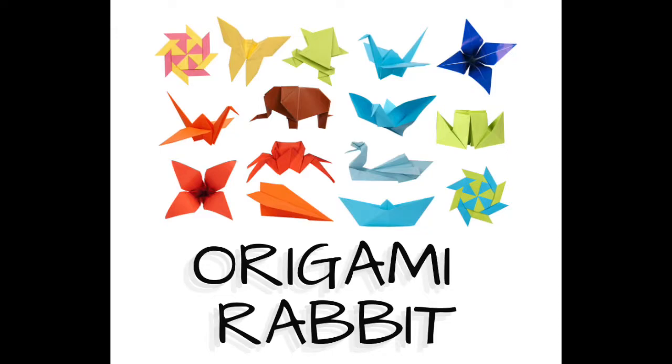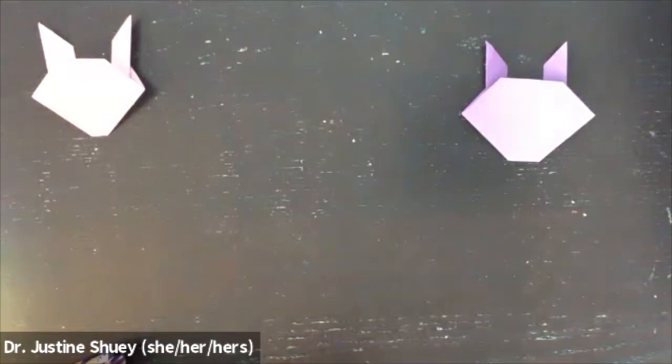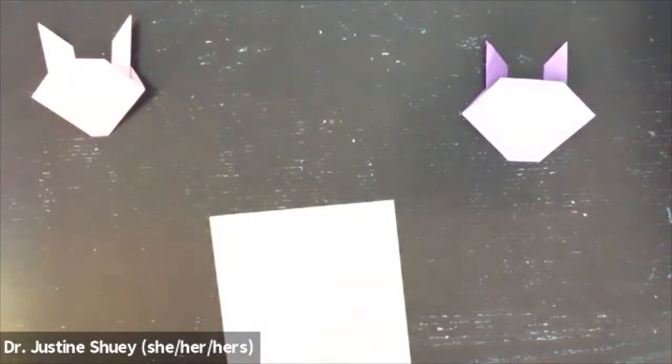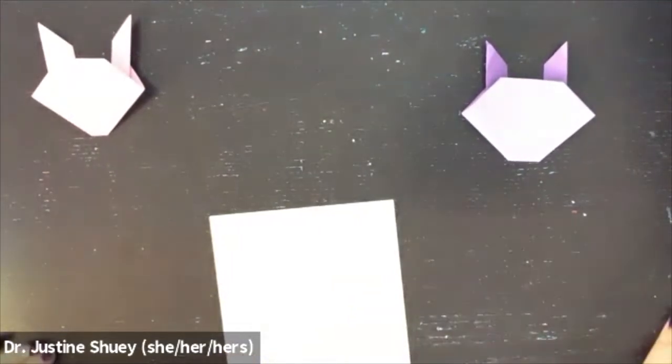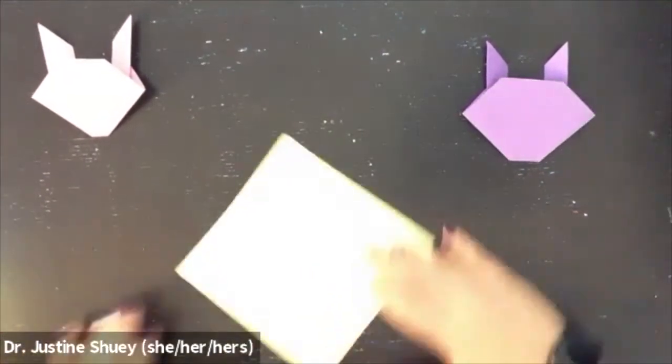The origami rabbit. We're going to start with a square sheet of paper. We're going to fold our paper in half from corner to corner.